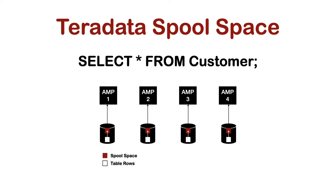There are four types of Spool Space, which we will explain in this video. It is essential for a Teradata system that there is always enough space to be used as Spool Space, the so-called Spool Reserve.